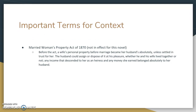Another term you should know is the Married Women's Property Act of 1870. Note the date — it's not in effect for Wide Sargasso Sea. Before the act, a wife's personal property before marriage became her husband's absolutely, unless it was settled in a trust, and that didn't happen very often. The husband had full control of everything that belonged to his new wife — whether they lived together or not, whether he treated her poorly, abused her, or cheated on her, it didn't matter. What was hers was truly absolutely his and she had no control over it. This becomes a problem in Wide Sargasso Sea.